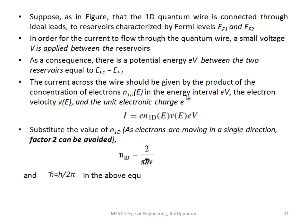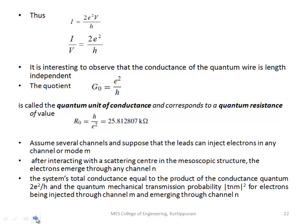Then substituting the expression for n1D: from the first module, n1D is equal to 2 divided by pi h-cross into v, where v is velocity. Substituting this into the current equation, replacing h-cross and h by 2, the equation simplifies to I equals 2e-squared V by h. That is, I by V equals 2e-squared by h, which gives quantized conductance.